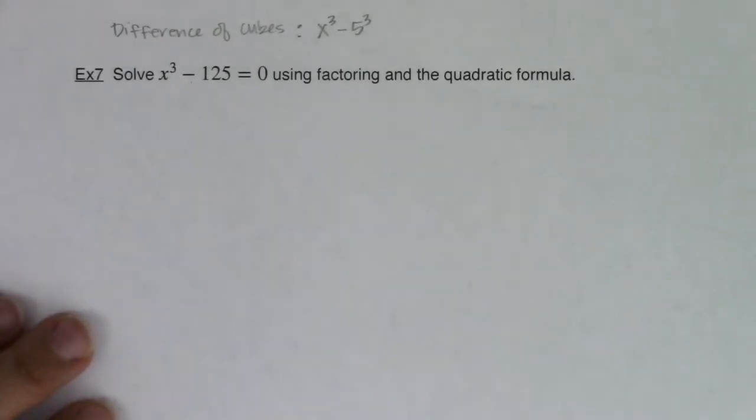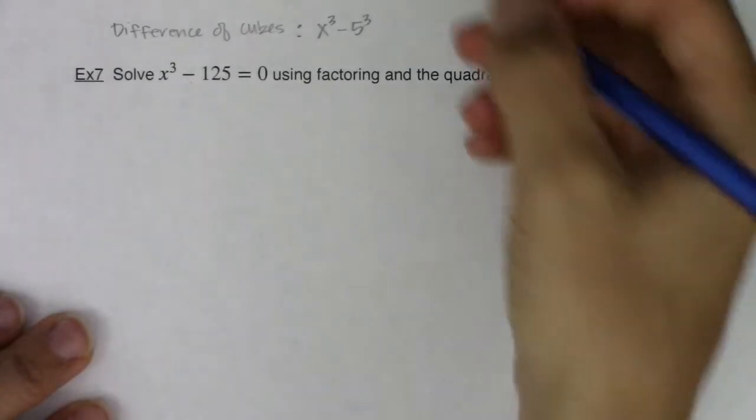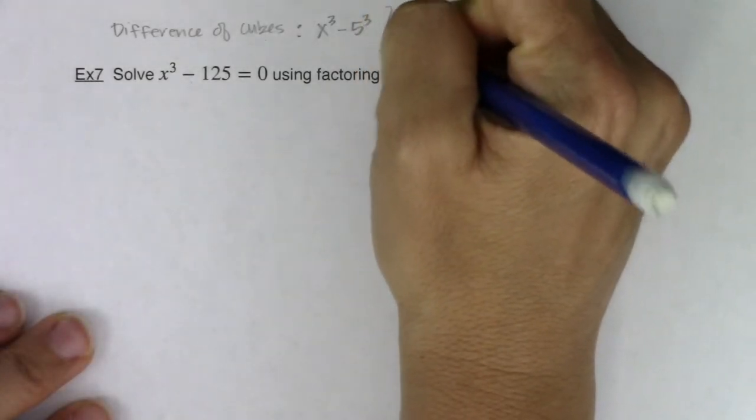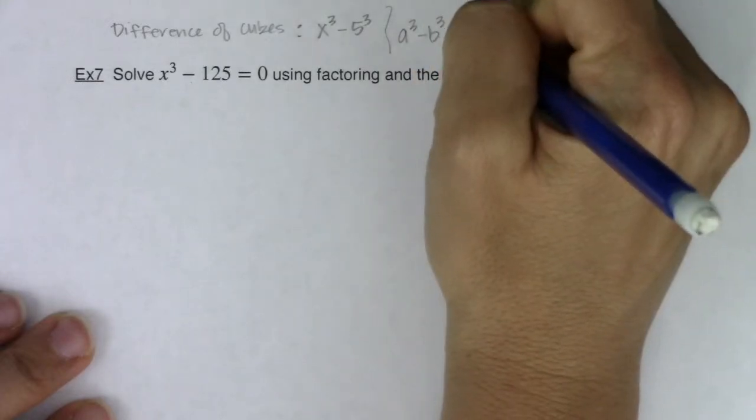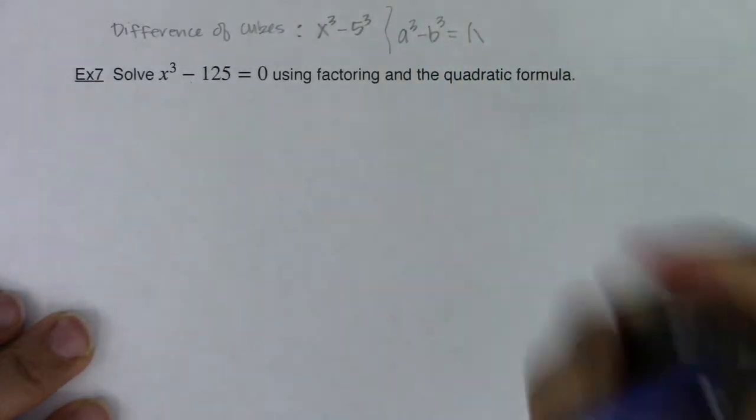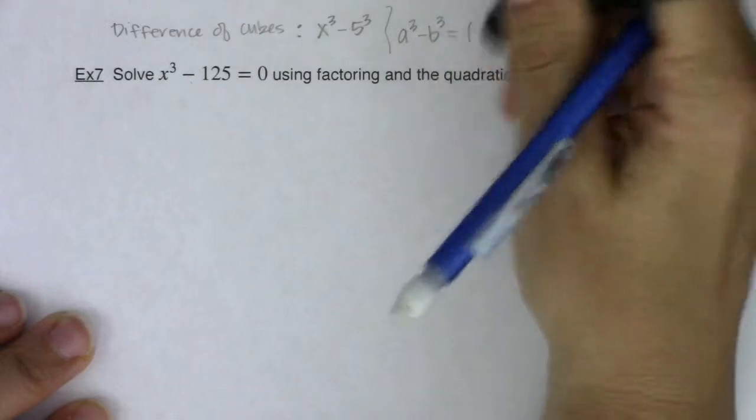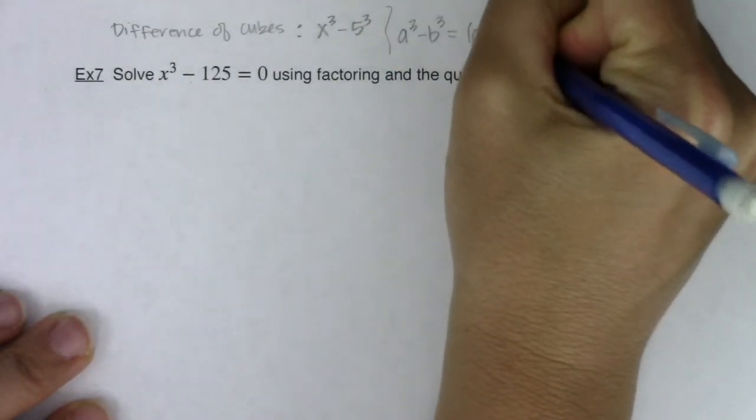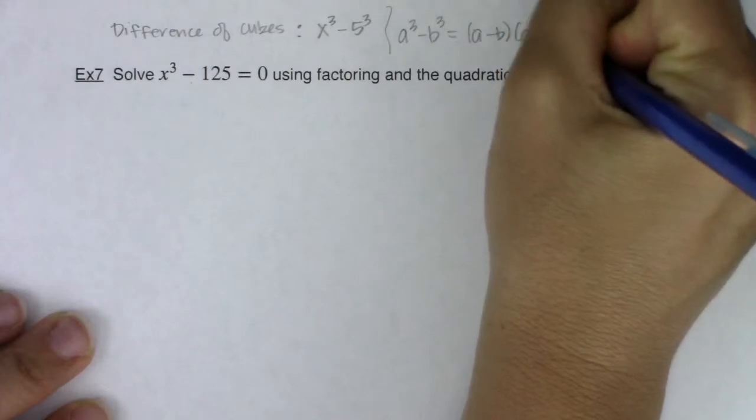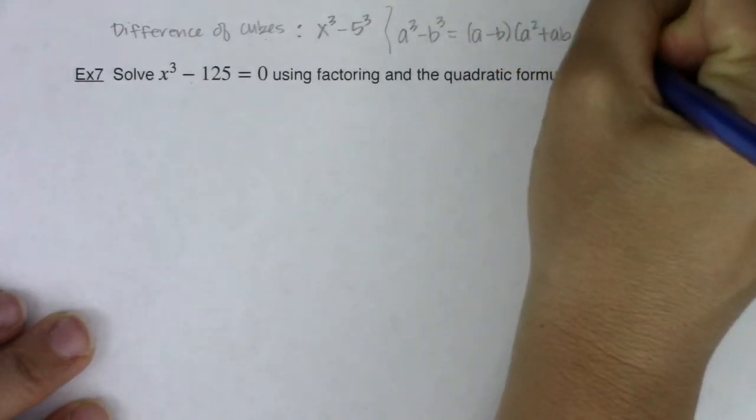You can see it down here on the bottom, but because I can't get it in the same view screen, I'm just going to write it here so we have it for reference. Whenever you have a cubed minus b cubed, that's going to turn into a minus b times a squared plus ab plus b squared.